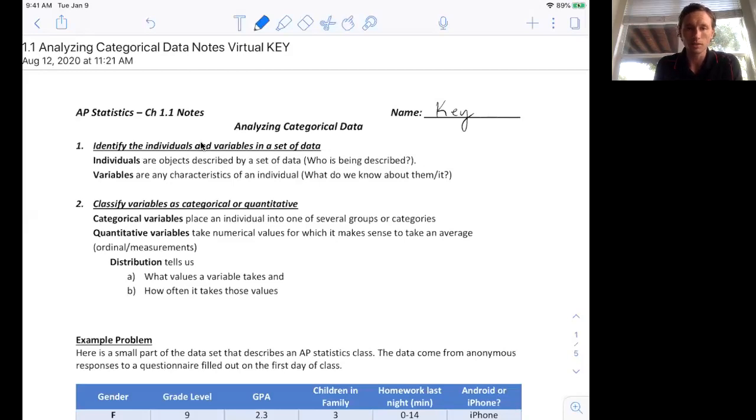The first one, identify the individuals and variables in the data set. The individuals are just the objects being described in a data set. You can always ask who is being described to answer that question. Variables are any characteristics of the individual. So what do we know about the individuals?